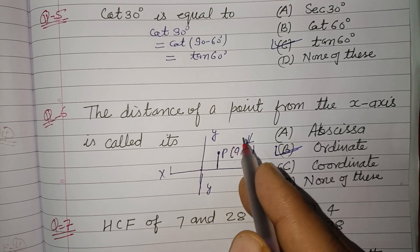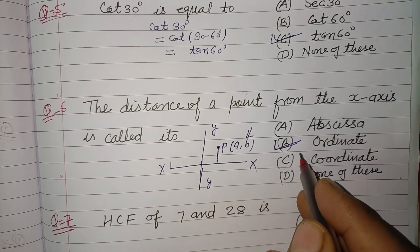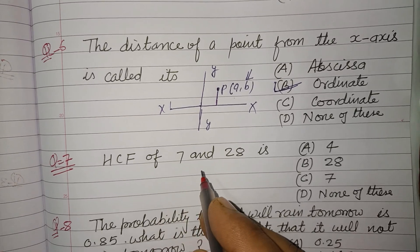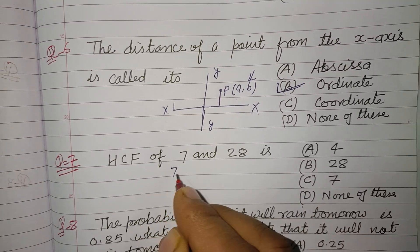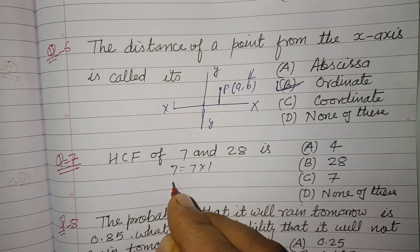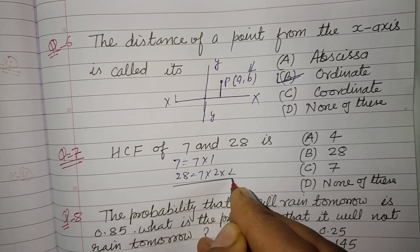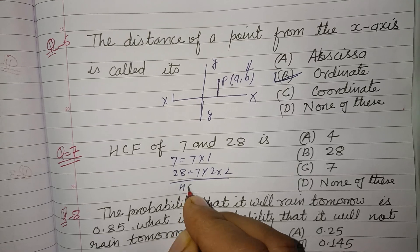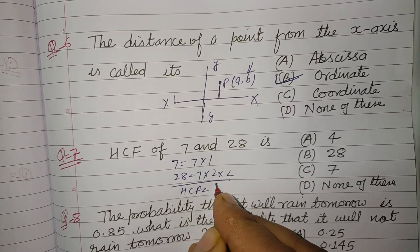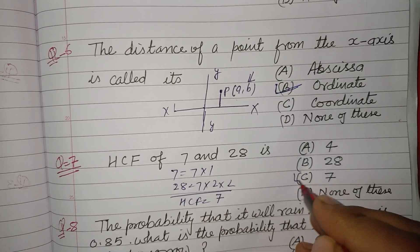HCF of 7 and 28. So 7 equal to 7 into 1, 28 equal to 7 into 2 into 2. So common factor is 7. So 7 is the HCF.